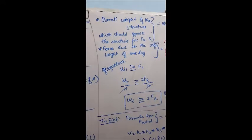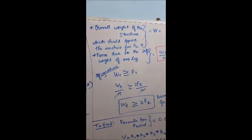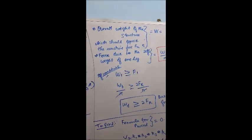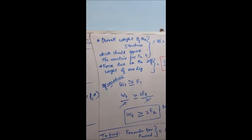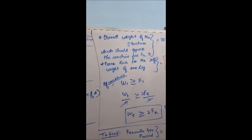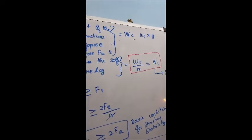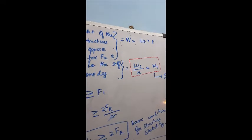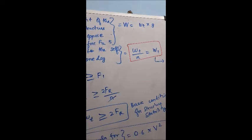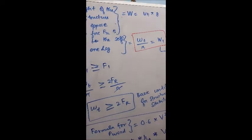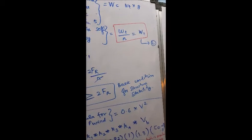The overall weight of the structure should oppose the reactive force Fr. We plan to overcome this reactive force developed due to wind by the structure's own weight W, which is the total mass times the acceleration due to gravity. If you want the weight on one particular leg, divide W by n, provided the structure is symmetric.